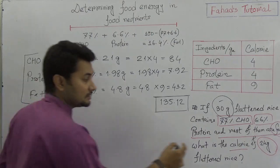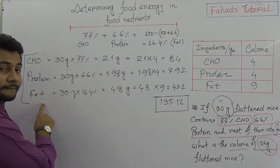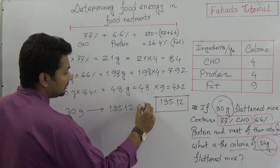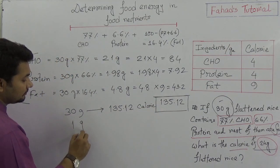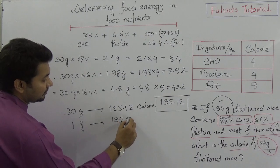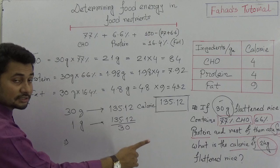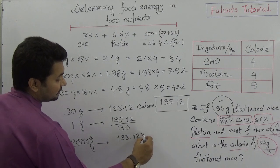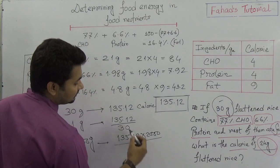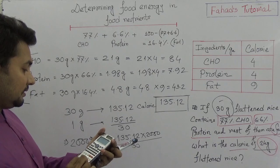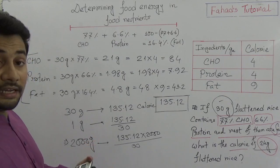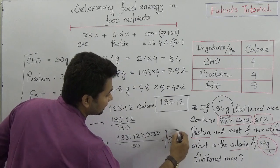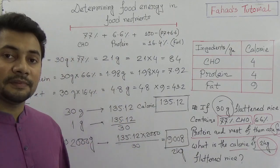The question asks for two kilograms, so we scale up. 30 grams contains 135.12 calories, so 2000 grams contains: 135.12 × 2000 ÷ 30 = 9008 calories. So 9008 calories are present in two kilograms of flattened rice.